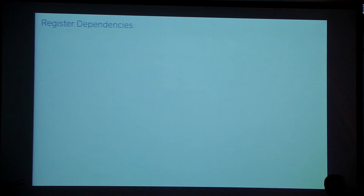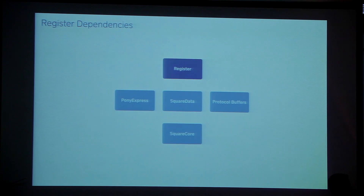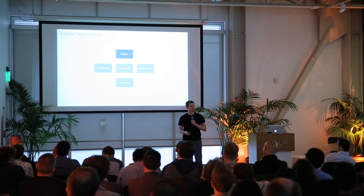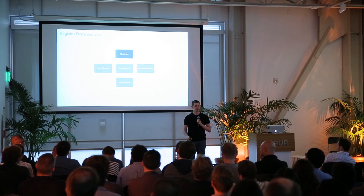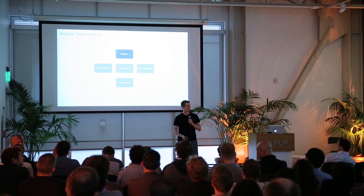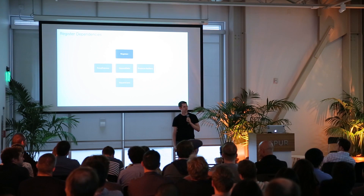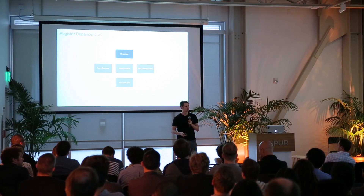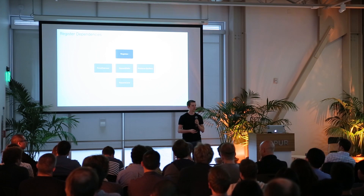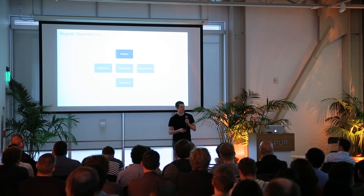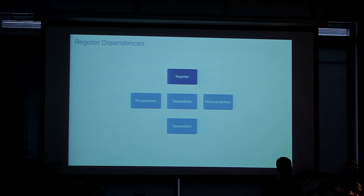To give you some more context, here's a simplified dependency graph for Register. Register consumes Pony Express, which is our library that wraps networking; Square Data, which wraps Core Data; Protocol Buffers, which handles serialization of data to and from the network; and also Square Core, which is our wrapper around foundation utilities. It's a pretty basic dependency graph. You can probably figure out how it works from here.